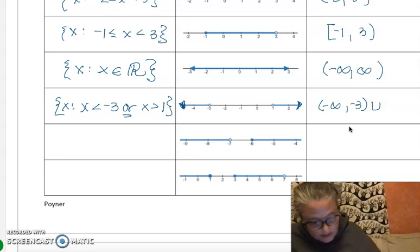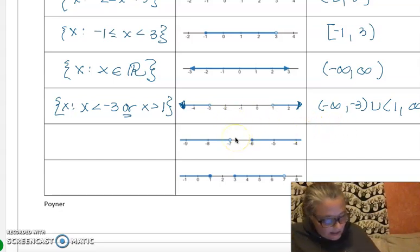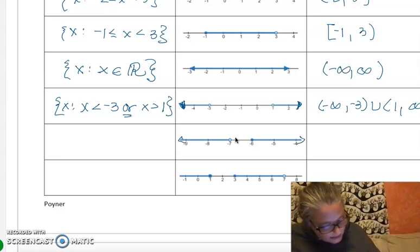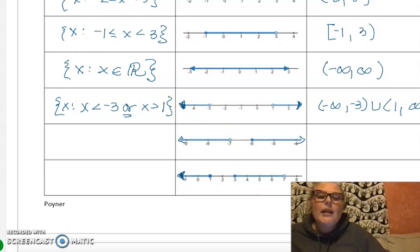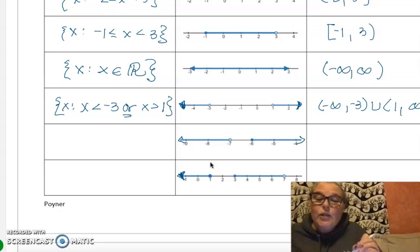Then from 1 to infinity, not inclusive. Every segment in set builder is separated by the word 'or,' and in interval notation you use the union symbol. Don't mix the two — use 'or' in set builder and the union symbol in interval notation.